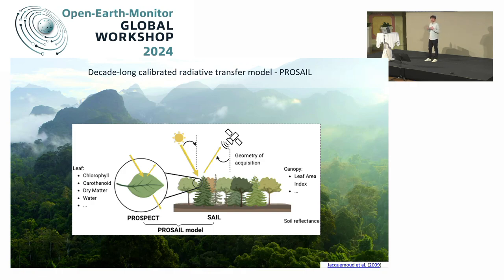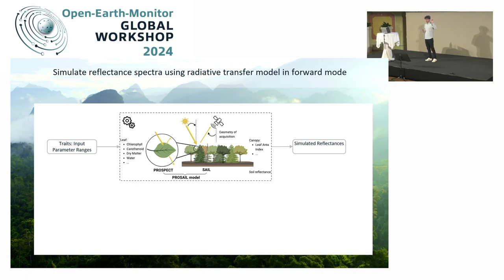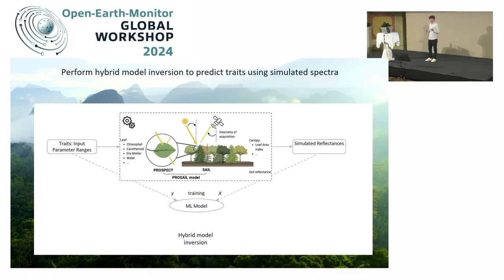You can use this information to generate simulated reflectances — basically you generate your own training data. So we start by defining the traits, setting all the parameters of these models, and applying the PROSAIL mechanistic model to get the expected simulated reflectance.